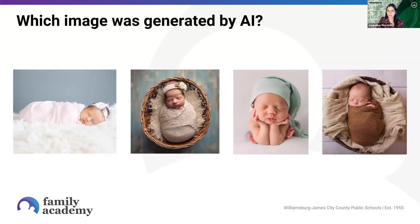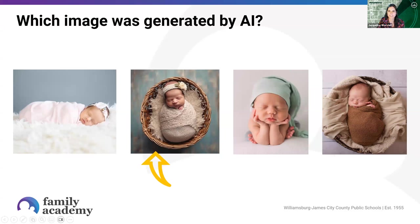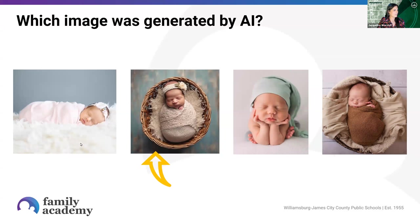We're getting some staggering opinions in the poll results. The correct answer was number two — baby number two is the AI-generated image. The most popular answer was number three, which is actually Kristen's son. Those were not the AI-generated photos.